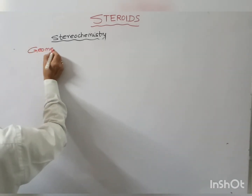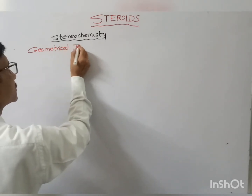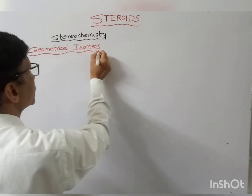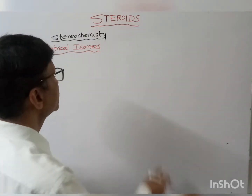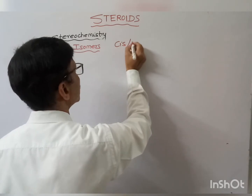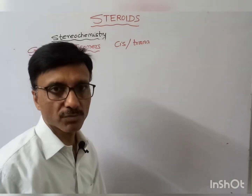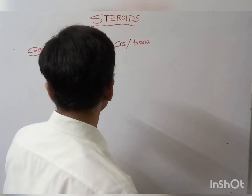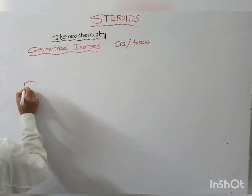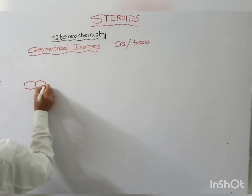Geometrical isomers — we know these as cis-trans isomers in steroids. So if I take polystane and write its structure...